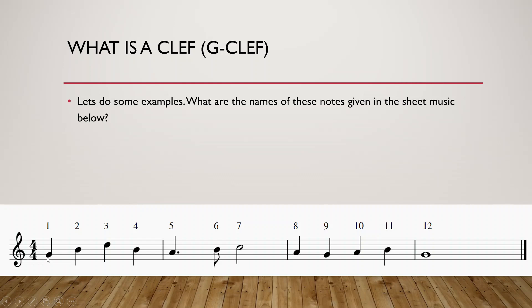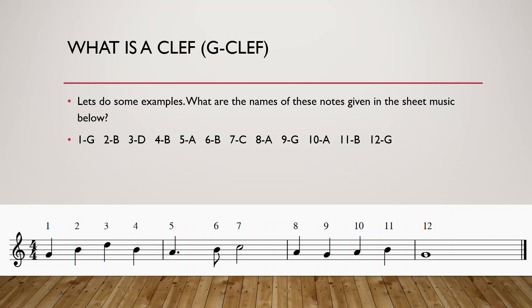The second note is two steps above G — G, A, B. The third note is two steps above B — B, C, D. The fourth note is a B again, the same as the second note. The fifth note is one step above G which is an A, because after G comes A again. Fifth note is A, sixth note B, seventh note C. The eighth note is an A, the ninth note is a G, the tenth note is A, the eleventh note is B, and the twelfth note is on the second line which is a G. And here are the answers given.